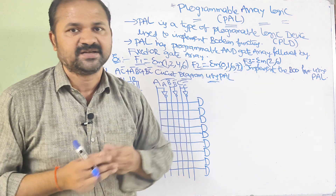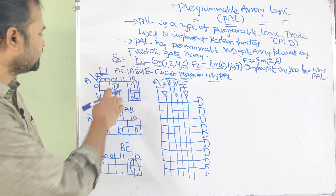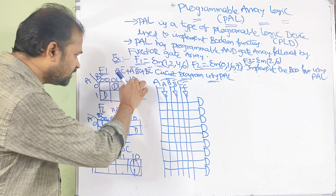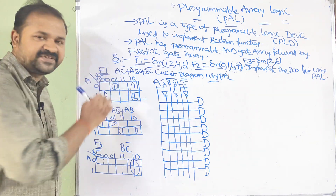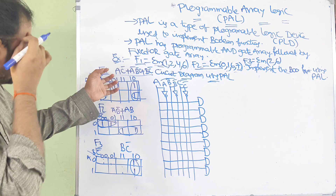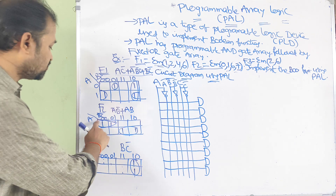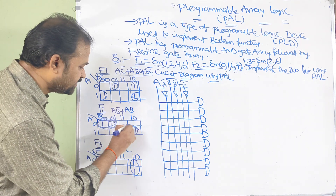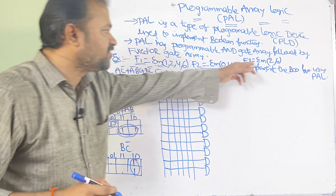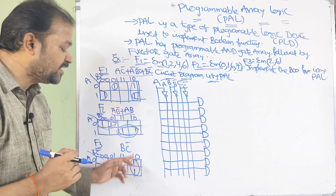The maximum minterm here is 7, so a 3-variable Karnaugh map is sufficient. For F1, with minterms 1, 2, 4, 6, we can combine certain cells into groups to get the boolean expression. For F2, sigma m of 0, 1, 6, 7, we can combine those cells into two groups to get the boolean expression. For F3, sigma m of 2, 6, we can combine those two cells as a group to get the boolean expression. Now we have to draw the circuit diagram using PAL.